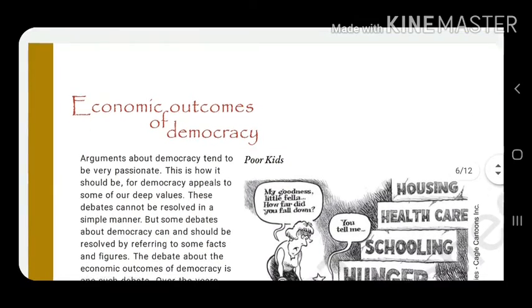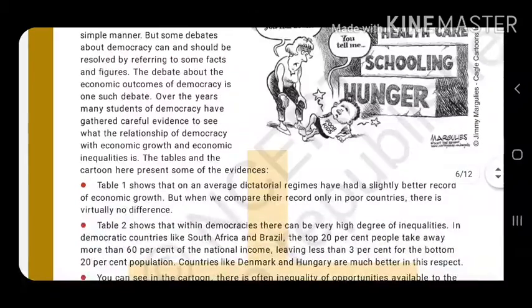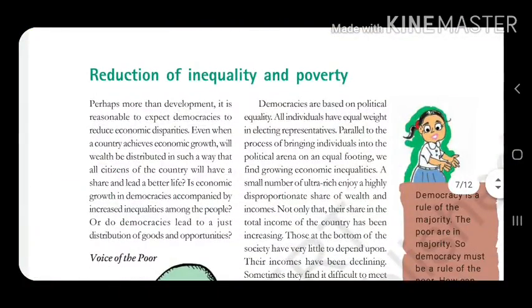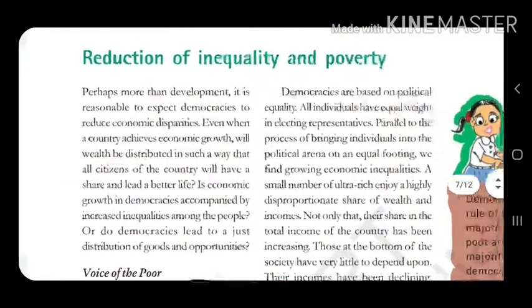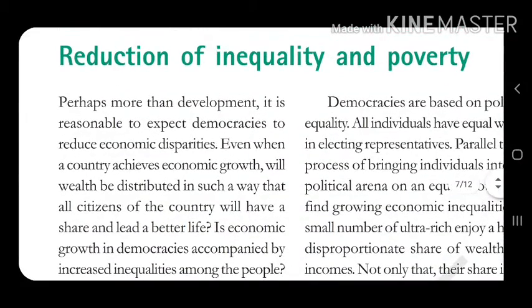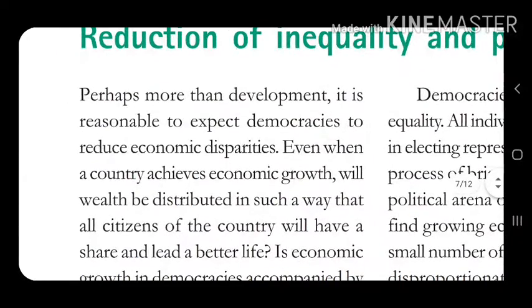You have to read the Economic Outcomes of Democracy topic on your own — you will be able to read it. Come to page number 94. The topic we start with here is Reduction of Inequality and Poverty. What does 'Reduction of Inequality and Poverty' mean?